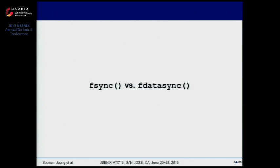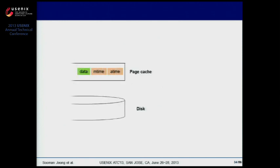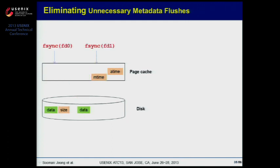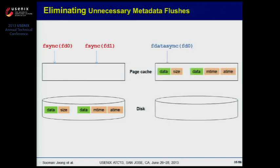Next, fsync versus fdatasync. fsync pushes both data and metadata to storage, including every change in metadata such as size, mtime, or atime. fdatasync is almost the same except it pushes metadata only when the size has been changed. So by using fdatasync instead of fsync, we can largely decrease the amount of metadata pushes.